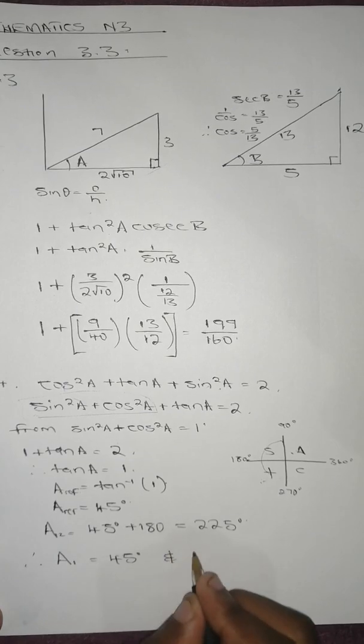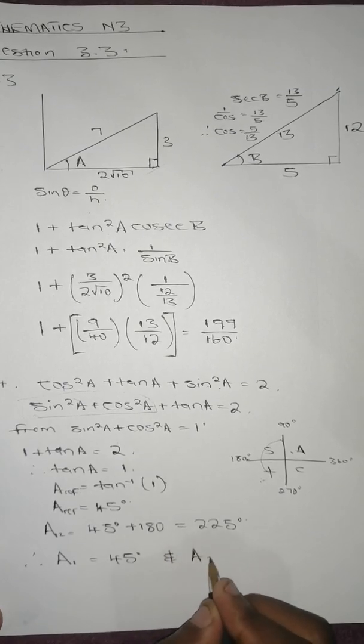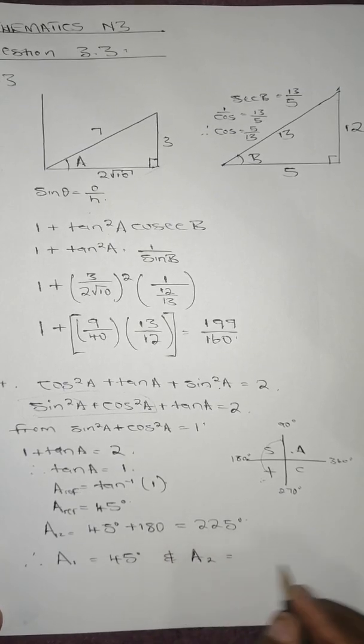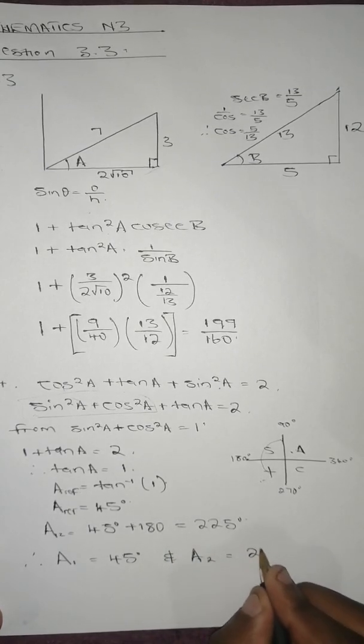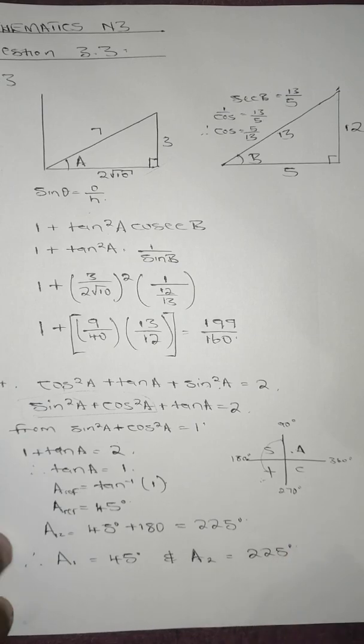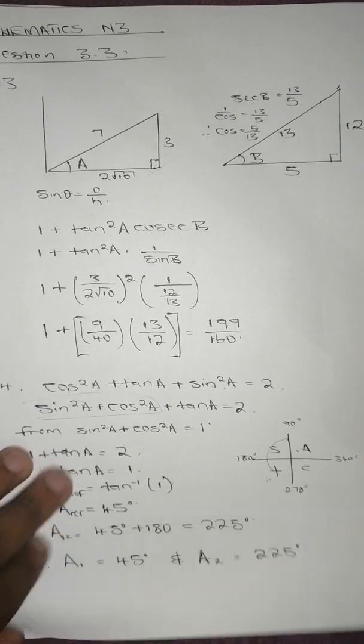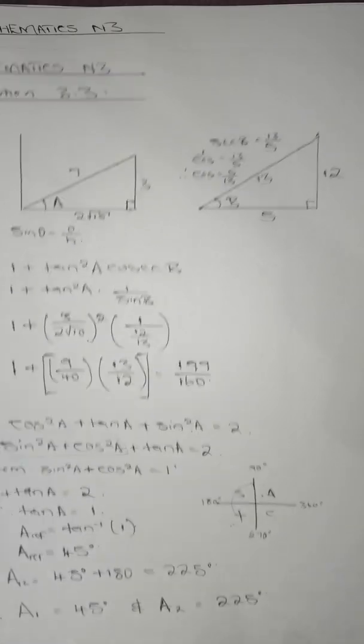Therefore a₁ equals 45 degrees and a₂ equals 225 degrees. That is the answer for question 3.4.